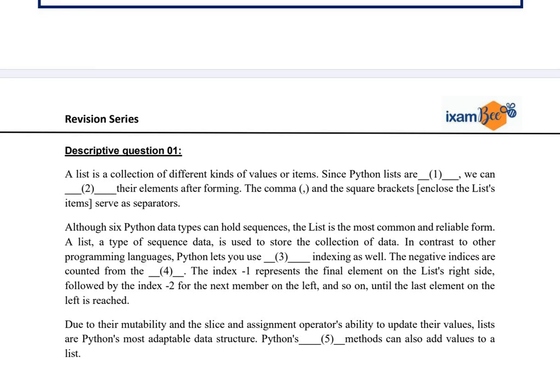This particular paragraph is talking about a list which is in Python. We can understand by reading the first line of the paragraph that a list is a collection of different kinds of values or items. Since Python lists are dash, we can dash their element after forming. Now this is the first blank that you have to fill.